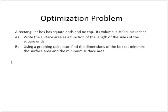A rectangular box has square ends and no top. Its volume is 300 cubic inches. Part A, write the surface area as a function of the length of the sides of the square ends.